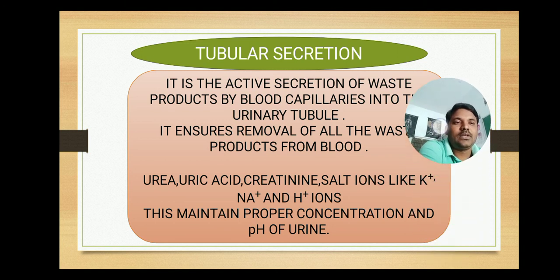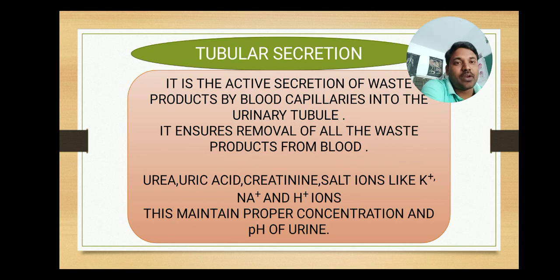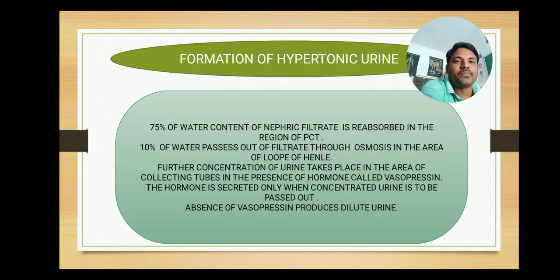It ensures removal of all waste products from the blood. The substances secreted back into the urine include urea, uric acid, creatinine, and salt ions like potassium, sodium, and hydrogen ions. This maintains proper concentration and pH of urine. In this third step, tubular secretion, the waste is sent back from the blood into the urine.